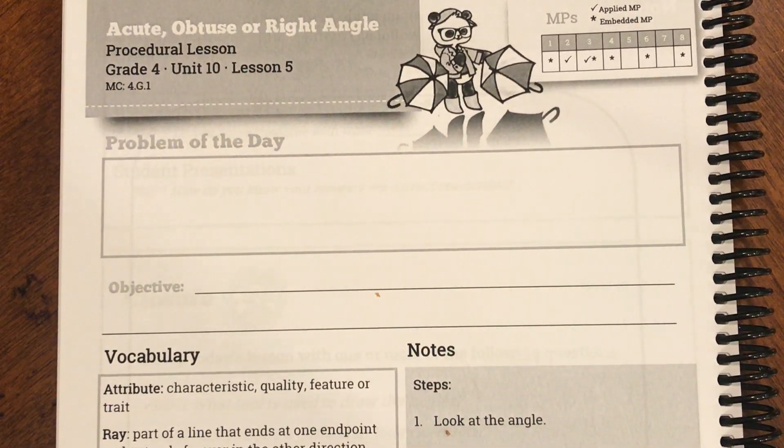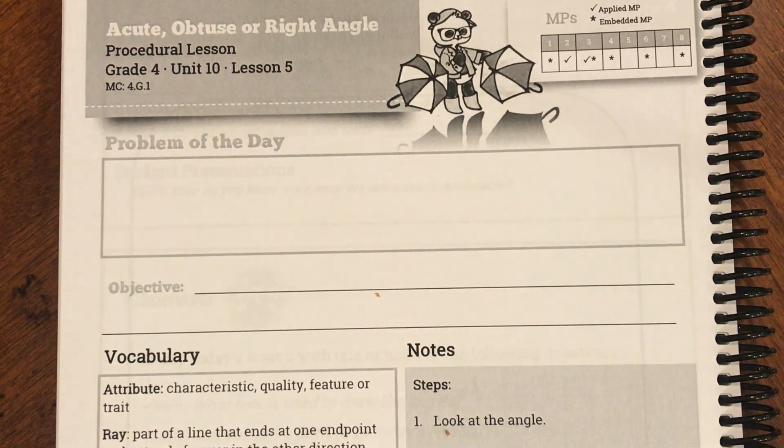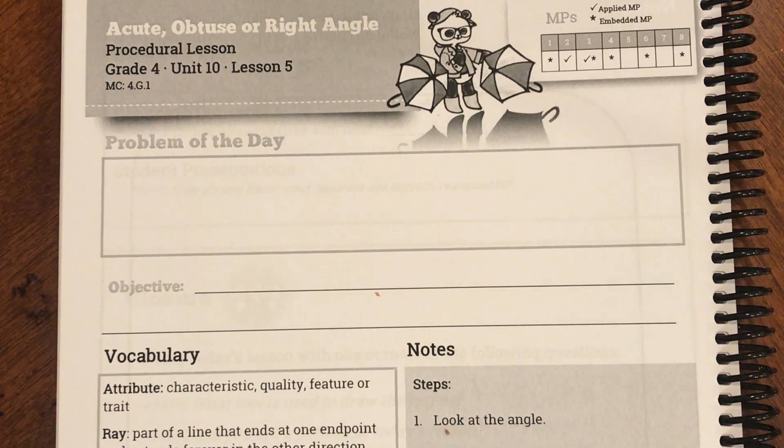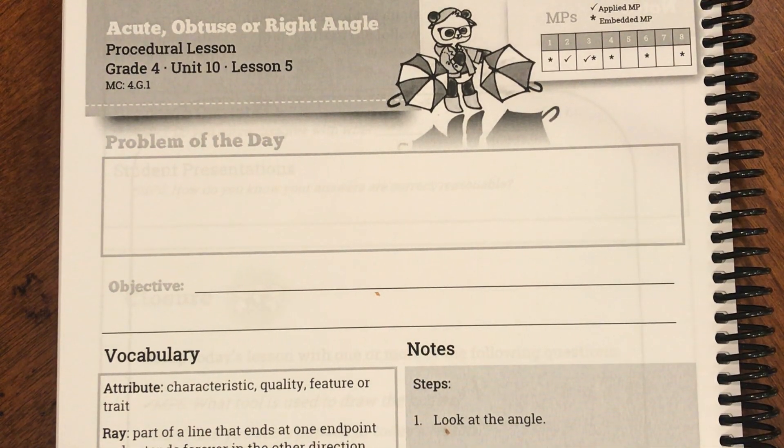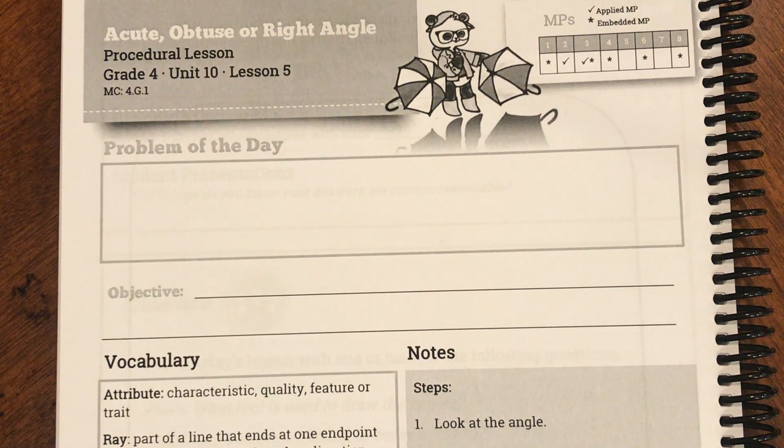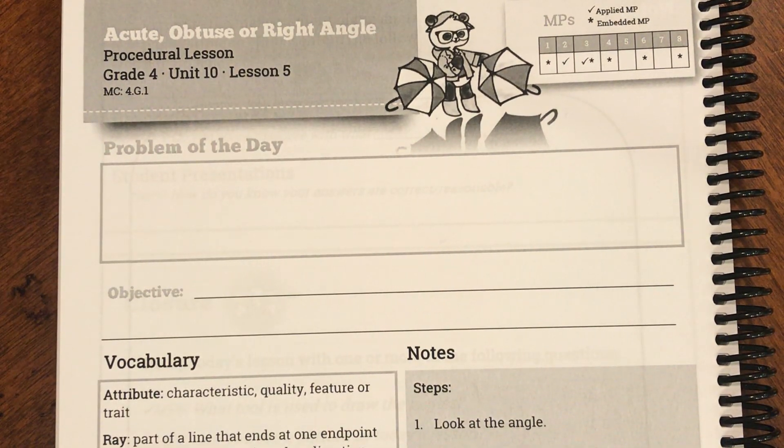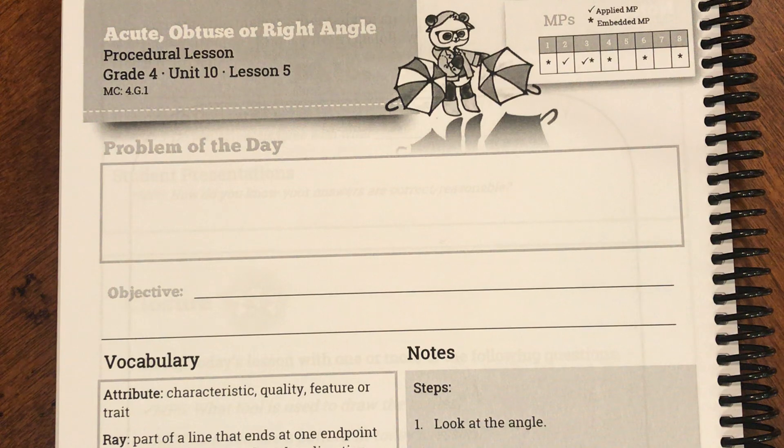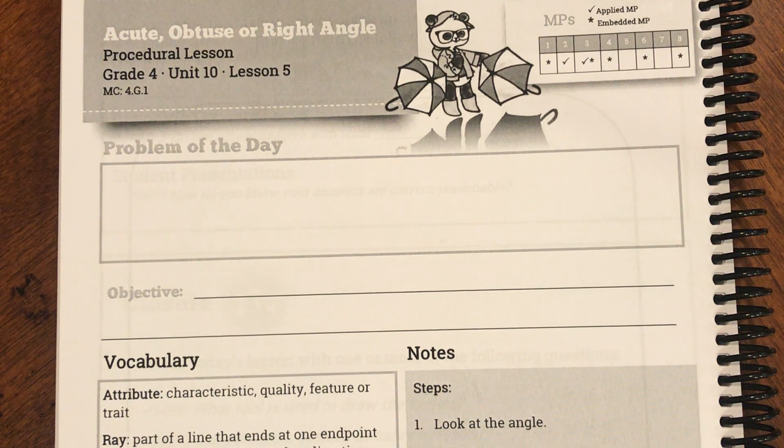Good morning, fourth graders. Today we are on page 181 of your student journal and we are on lesson 5. Today we are going to be doing something that we have been doing, talking about angles and talking about what we started the last two lessons with degrees, but we're going to be adding some more titles or definitions to those.